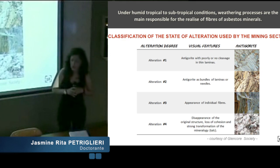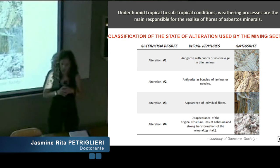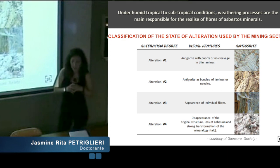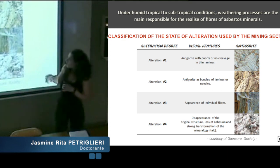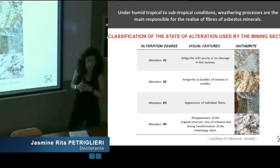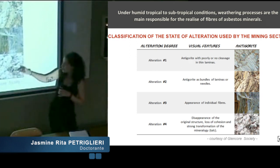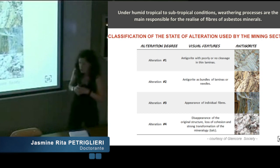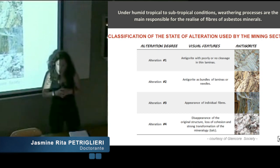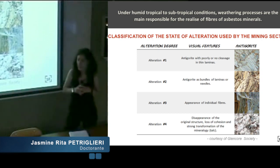Natural deposits exposed to these conditions are generally subjected to further processes of alteration. At present, a semi-quantitative method able to classify this kind of alteration is not present and still lacking. Conversely, geologists of mining companies develop their own systems of classification. I report the table for the antigorite samples: increasing the degree of alteration from one to four, we observe a greater capacity in the emission of fibers. But these criteria are all visual and morphological.